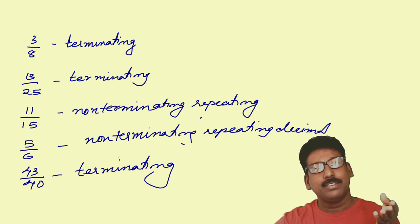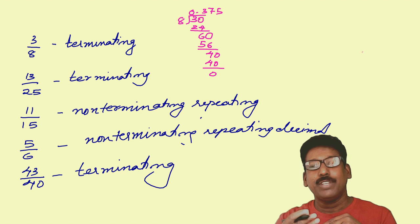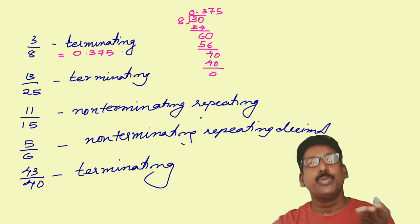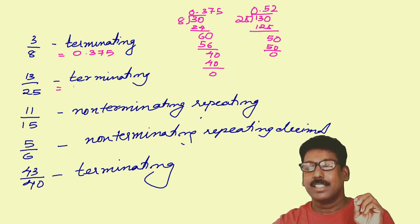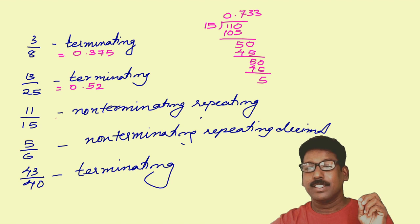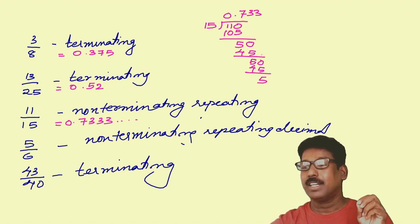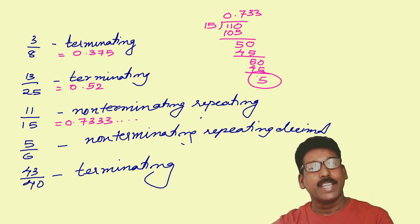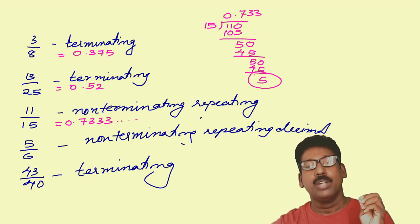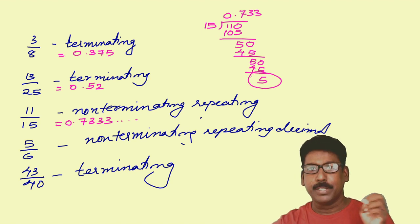Let us verify by actual division. 3 by 8 — if you divide 3 by 8 you get 0.375, that means it is terminating. Now 13 by 25 — you get it as 0.52. Now 11 by 15 — you get it as 0.7333 etc. Here you are getting 5 as remainder in all the cases, so 3 is repeating. So the decimal expansion of 11 by 15 is non-terminating repeating decimal.